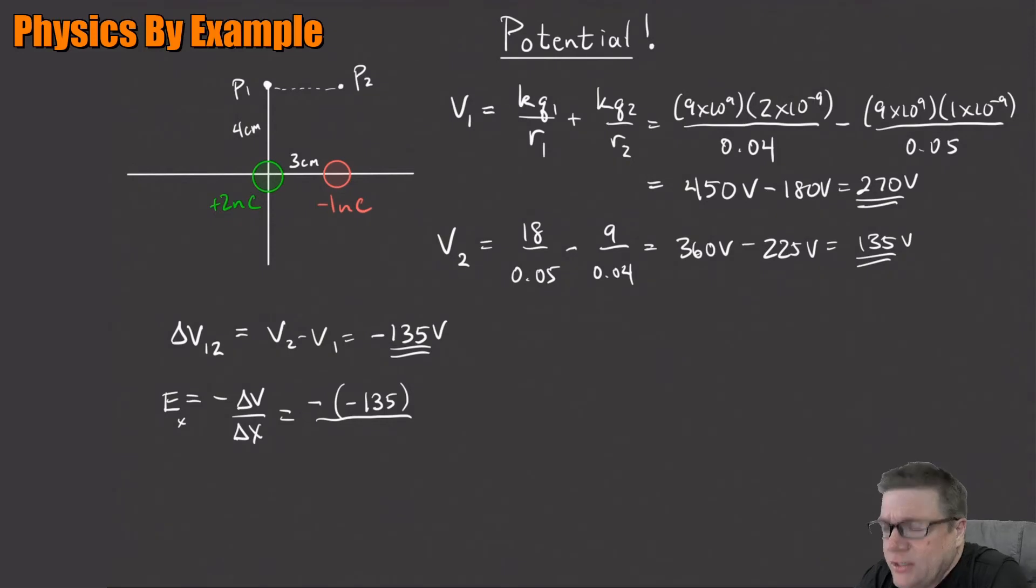3, right? So divided by 0.03. And if you do this, you should get like 4,500 volts per meter. So the electric field is positive. The x component of the electric field anyway is positive and directed that way. And its magnitude is 4,500. It used to be that we would call it newtons per coulomb. But the equivalent unit volts per meter is the same as newtons per coulomb.